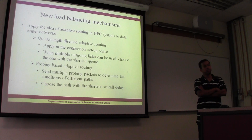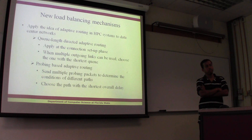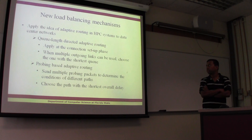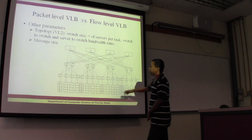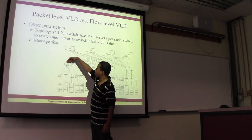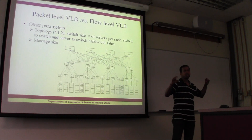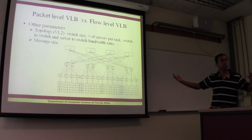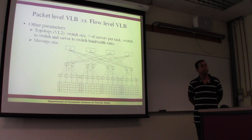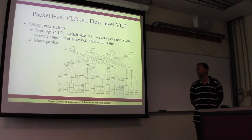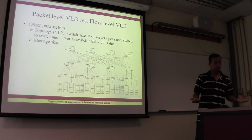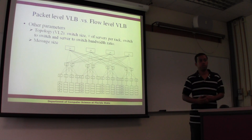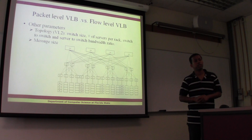An audience member noted that checking at every level seems very expensive and asked whether there are ideas for optimizing it. The response was that at each node you only check half the number of ports, so it's not extremely expensive. The highest-order switches currently have up to 128 ports, so checking half — 64 — is manageable.